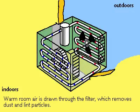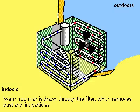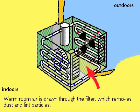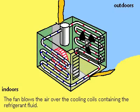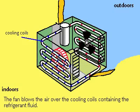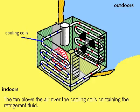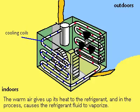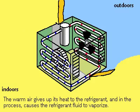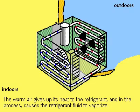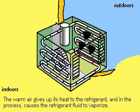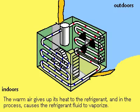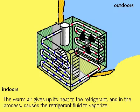Warm room air is drawn through a dust filter by a fan, then blown over the cooling coils which circulate the refrigerant in its liquid state. As the room air flows by the coils, it causes the liquid in the coils to evaporate, and in the process, heat is absorbed by the refrigerant as it turns to gas. The cooled air is blown back into the room.